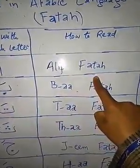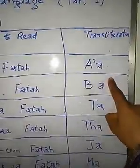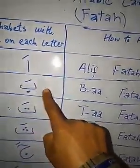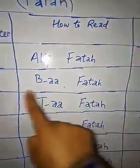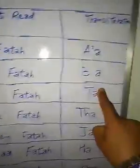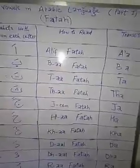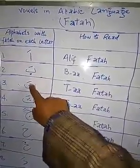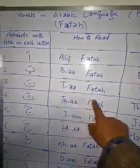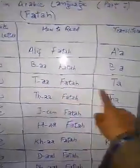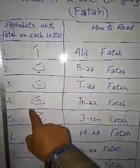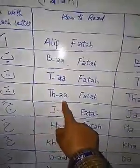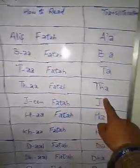Alif Fatah is called 'a'. The second one is Ba, with a short diagonal stroke on it — Ba Fatah is called 'ba'. Then Ta, having a short diagonal stroke on it, is called 'ta'. The fourth one is Tha, having a short diagonal stroke on it — Tha Fatah is called 'tha'.